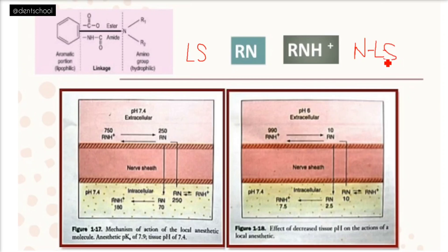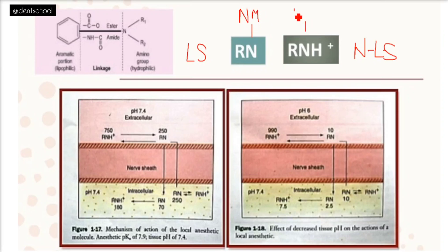Two key points: first, RN is lipid soluble and RNH+ is not. Because RN is lipid soluble, it is able to cross the nerve membrane and enter the neuron. RNH+, being not lipid soluble, cannot cross the nerve membrane. Second, only RNH+ is able to bind to the sodium channels and block nerve conduction — RN, being uncharged, cannot bind. So RN crosses the nerve membrane, and RNH+ binds to the sodium channel receptor.